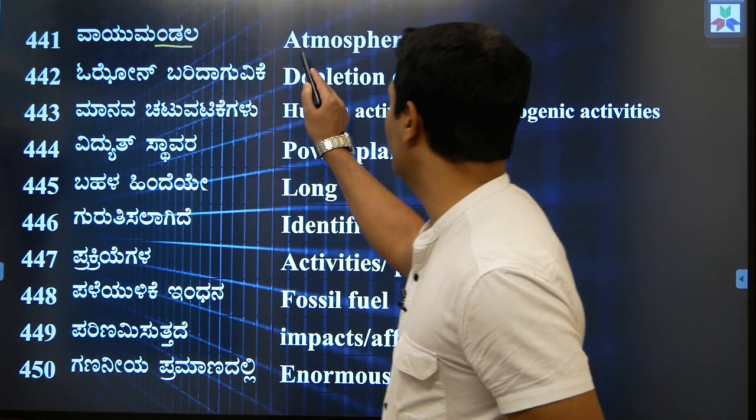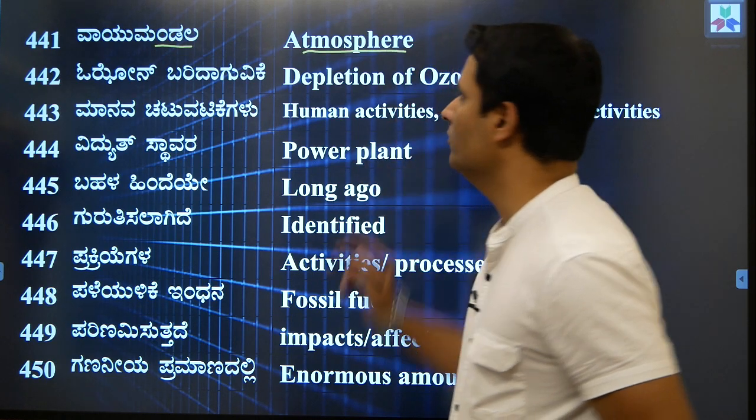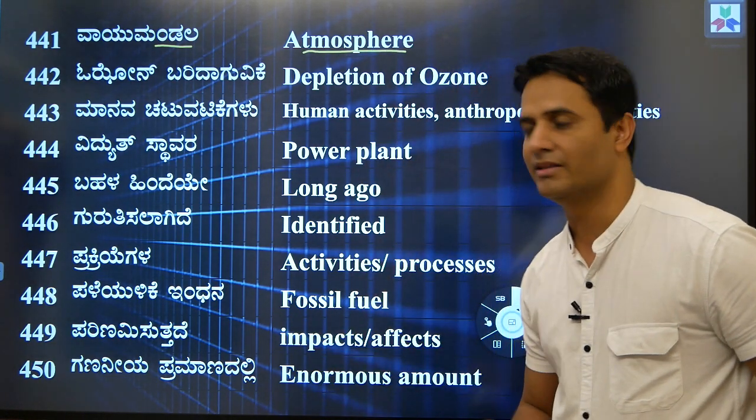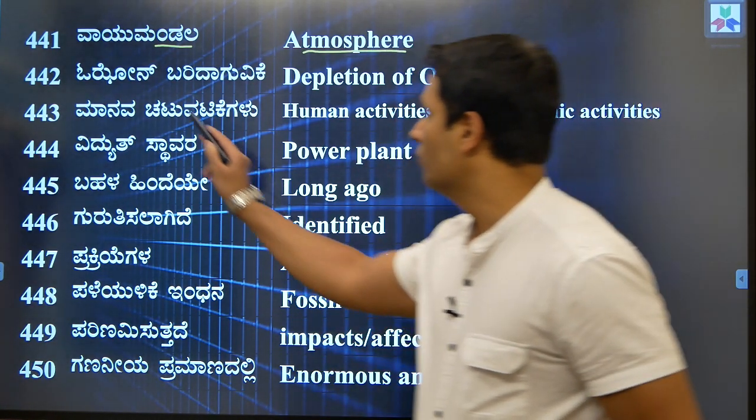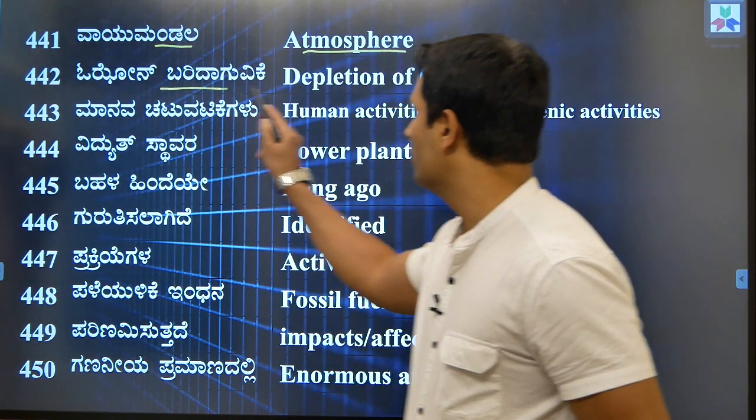Word number 1 is 'vayumandala'. We call it 'atmosphere' in English. Related to this is 'ozone baridaguvike' — the depletion of ozone.